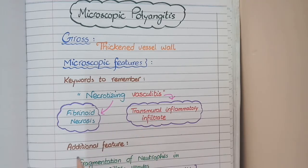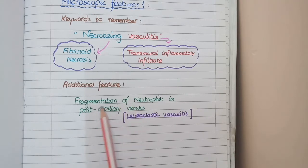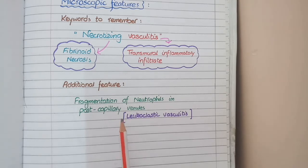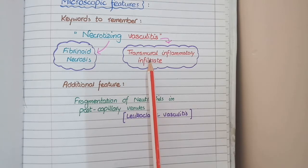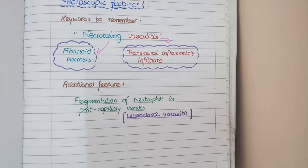One additional feature is the presence of fragmented neutrophils in post-capillary venules. Due to this presence of fragmented neutrophils in post-capillary venules, microscopic polyangitis is also known as leukoclastic vasculitis. Overall, the microscopic features include fibrinoid necrosis, transmural inflammatory cell infiltrates, and fragmented neutrophils in post-capillary venules. These changes are labeled as microscopic polyangitis only if it affects small-sized vessels.